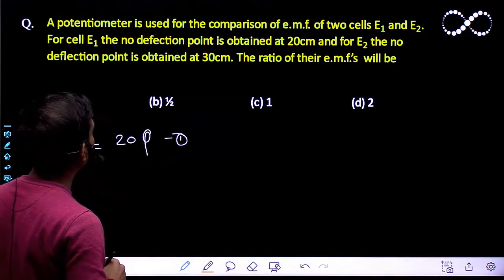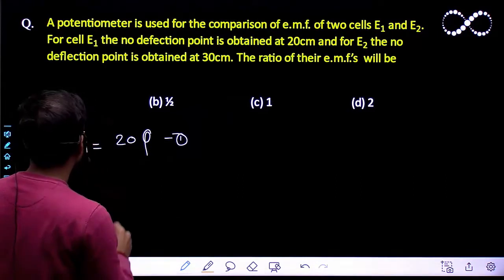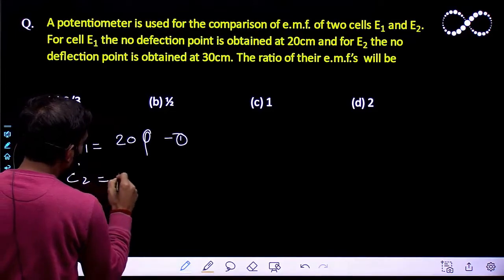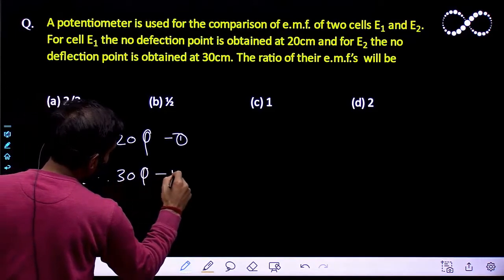For E2, the no deflection point is obtained at 30 centimeters. So I can say E2 will be equal to 30 phi, and that is equation 2.